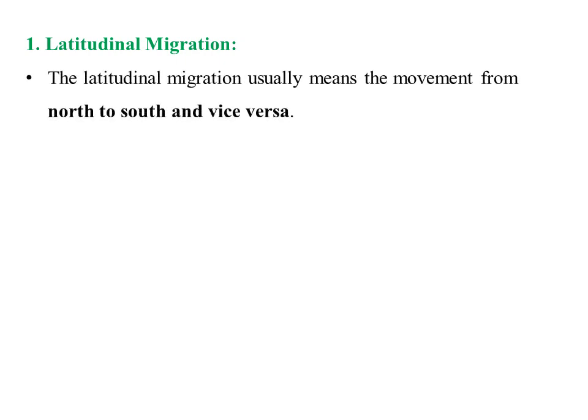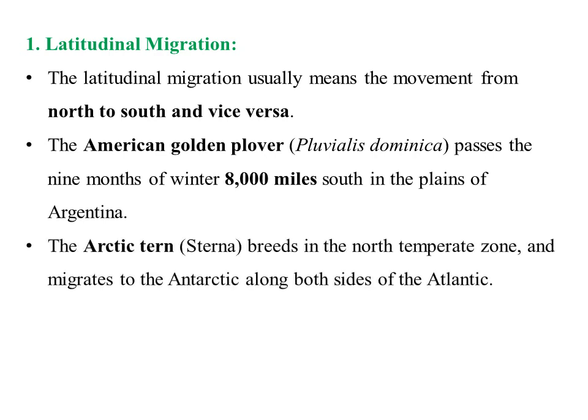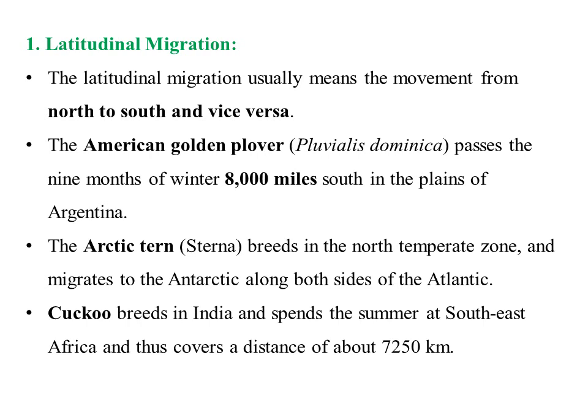In latitudinal migration, birds migrate from north to south or south to north direction. For example, the American golden plover travels along 8,000 miles south to the plains of Argentina — a typical example of latitudinal migration. The Arctic tern breeds in the north temperate zone and migrates to the Antarctic along both sides of the Atlantic Ocean. The cuckoo breeds in India, spends summer in Southeast Africa, covering a distance of about 7,250 kilometers.